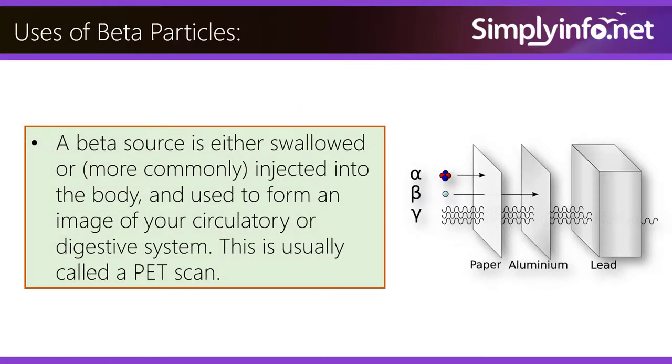A beta source is either swallowed or, more commonly, injected into the body and used to form an image of your circulatory or digestive system. This is usually called a PET scan.